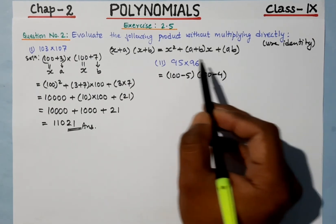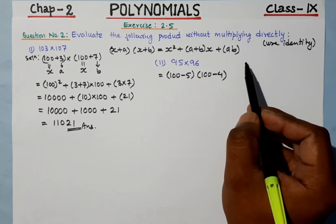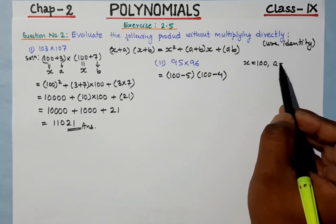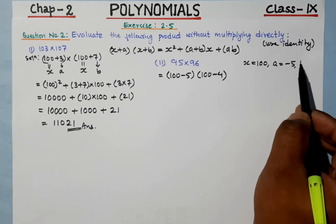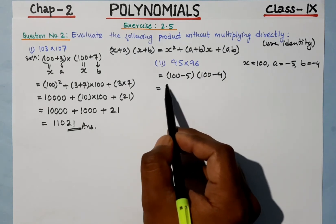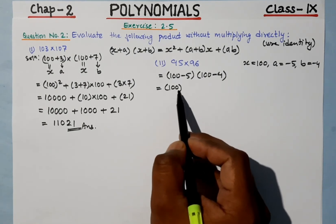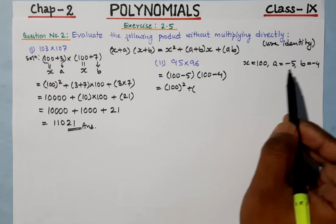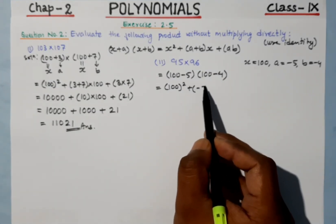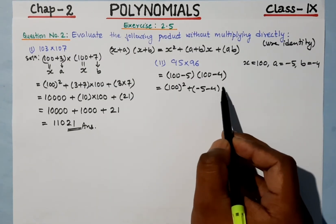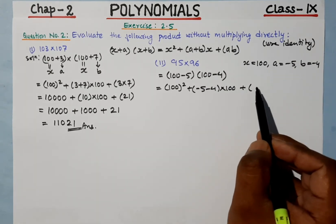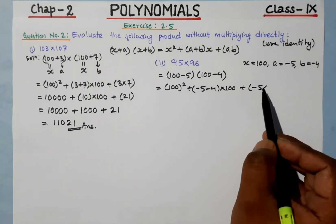So here x = 100, a = −5, and b = −4. Applying the same identity: x² + (a + b)x + ab = 100² + (−5 + −4) × 100 + (−5 × −4).